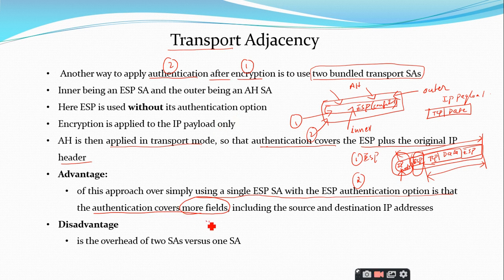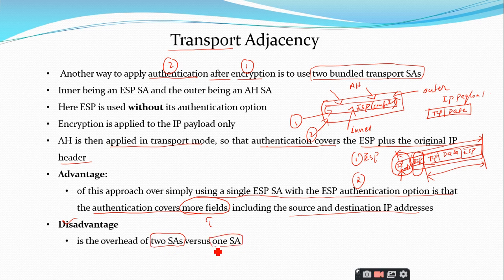The advantage of transport adjacency is that authentication covers more fields including the source and destination IP addresses — the IP header plus ESP header. The disadvantage is the overhead of processing two security associations rather than one, which increases the processing burden at the destination.